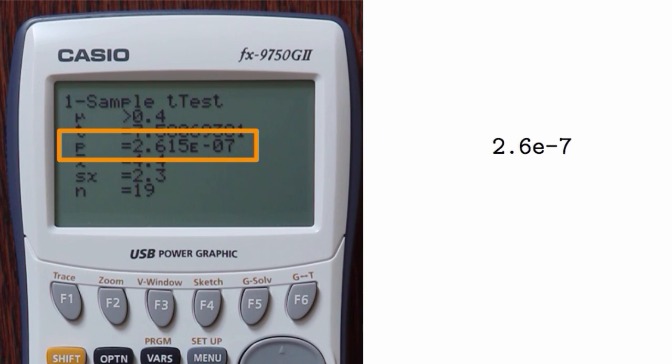To put this into standard decimal form, I could write 2.6 and then, since it is e negative 7, move the decimal to the left by 7 spots.